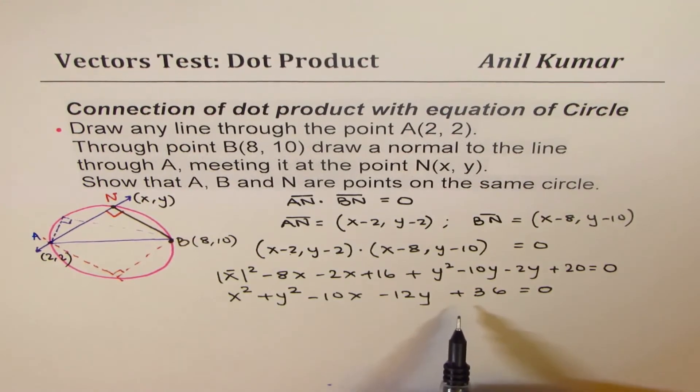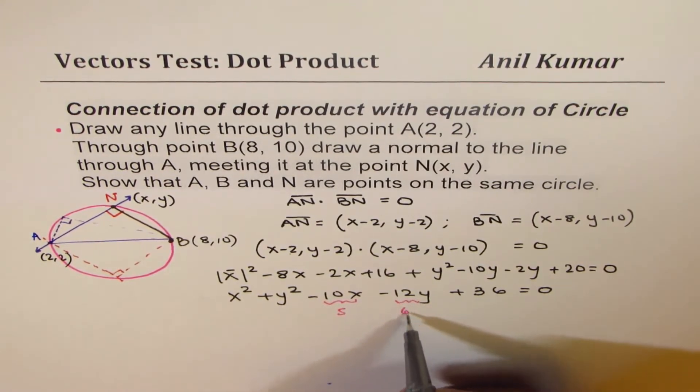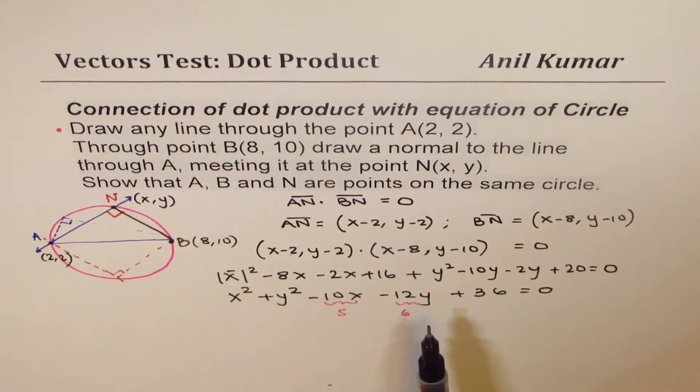Now clearly, this is a circle with the center at half of this - at half of this, which is at 5, and 6. So that's the equation of a circle. You can actually complete the square and also find it, but at this stage, we know this represents a circle.